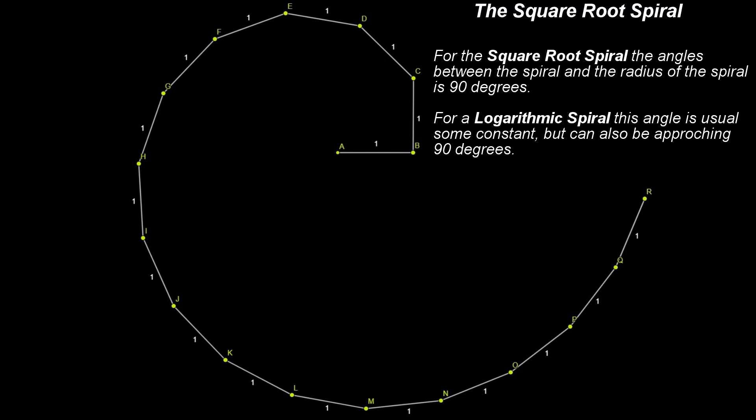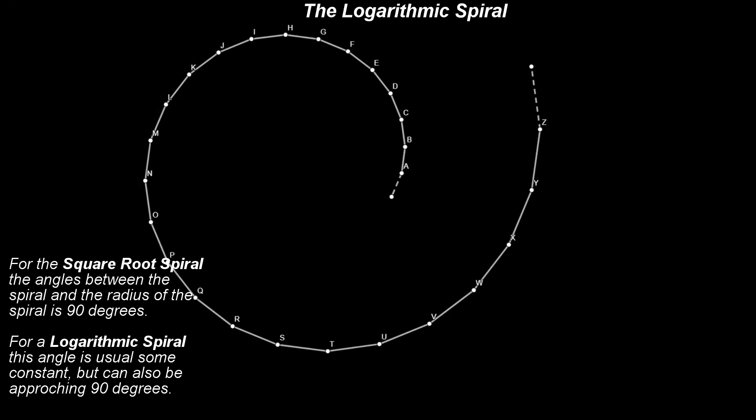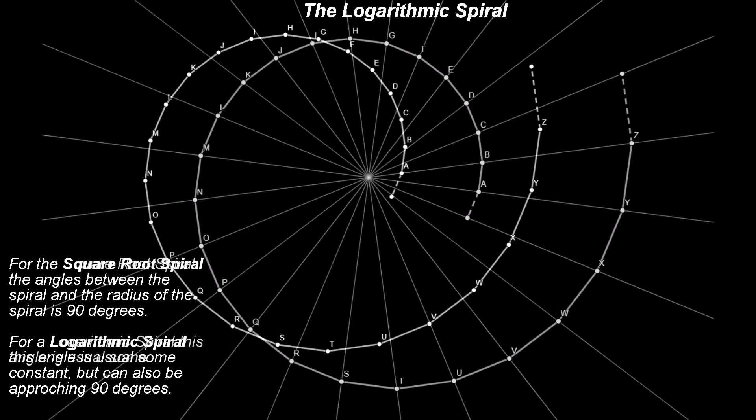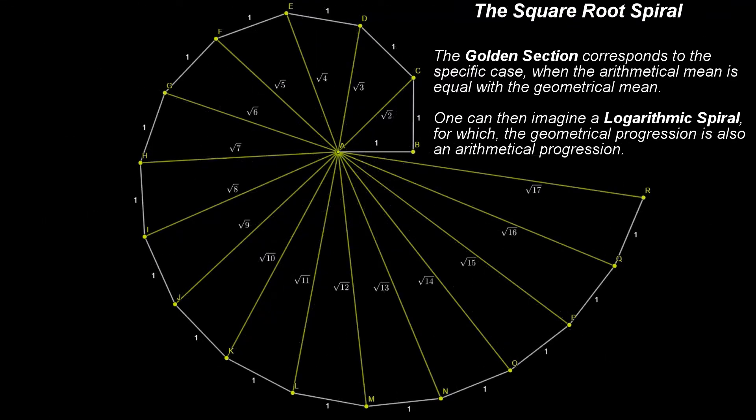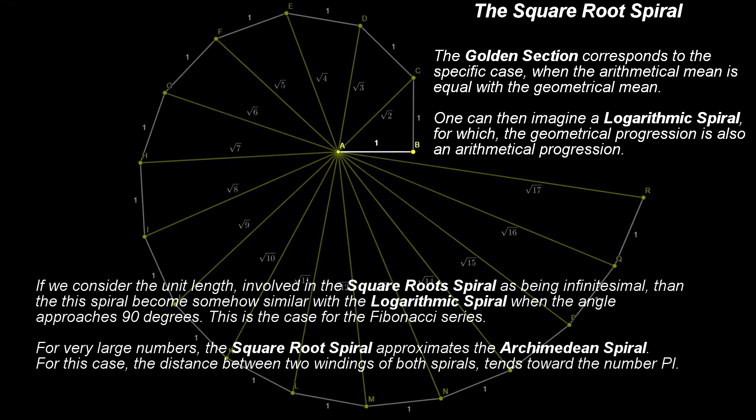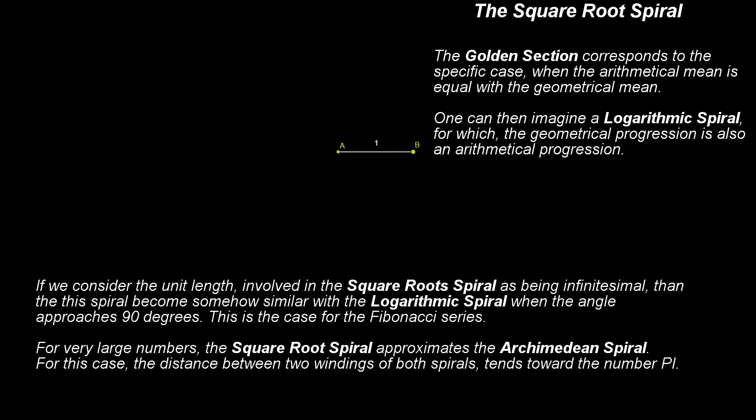B. For the square root spiral the angles between the spiral and the radius of the spiral is 90 degrees. For a logarithmic spiral this angle is usual some constant, but can also be 90 degrees. Now, if we consider the unit length involved in the square root spiral as being infinitesimal, then the two spirals are similar.